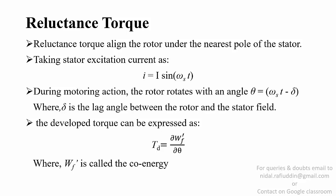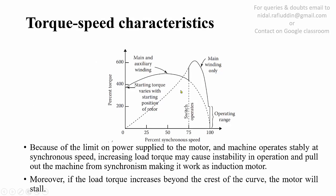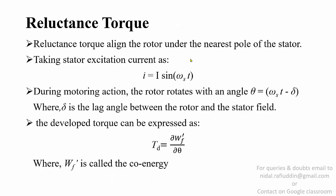The reluctance torque will allow the rotor to cling to the nearest stator pole. Now we will look at the reluctance torque acting on the rotor — this applies to all three types of reluctance motors: synchronous, variable, and switched. We assume the excitation current as I sin(ωs·t), where ωs corresponds to the frequency of sinusoidal variation of the current supply. Since we are talking about synchronous speed, the angle the rotor makes with the stator pole is ωs·t minus δ, where δ is the lag angle between the rotor and the stator field. The developed torque can be expressed as ∂/∂θ of wf', where wf' is the co-energy. We take the partial derivative of wf' because it also depends on the current.